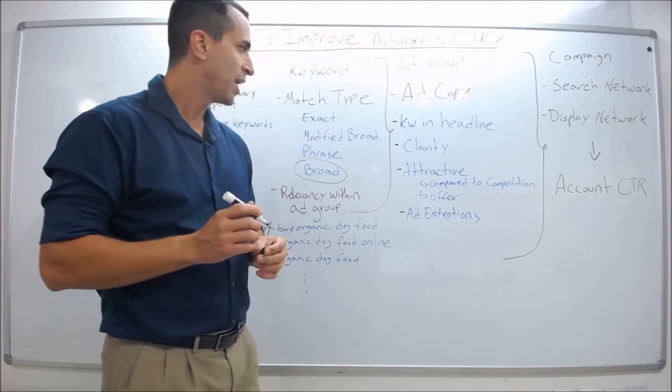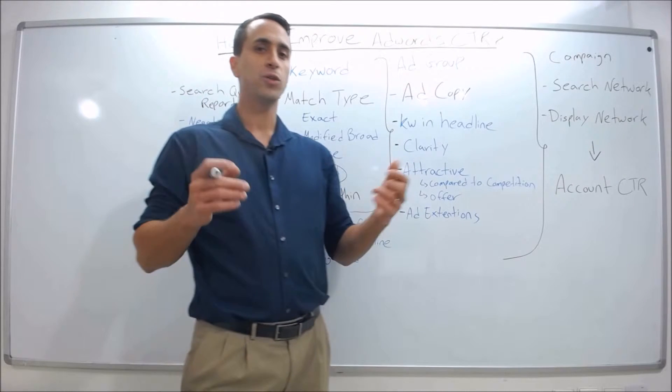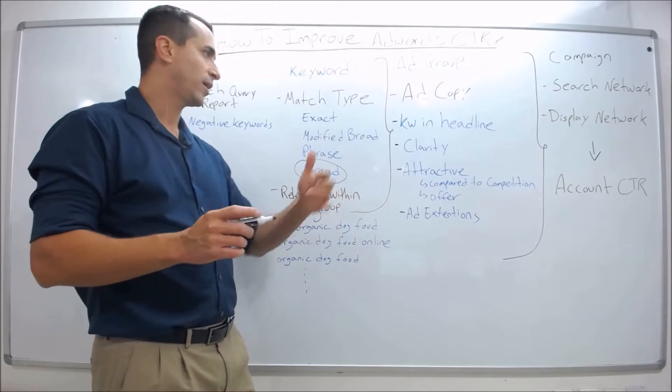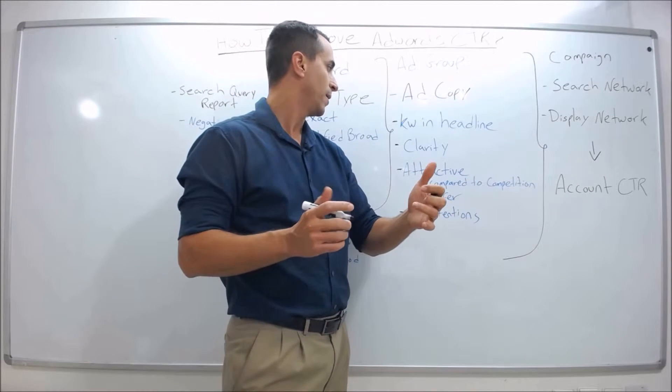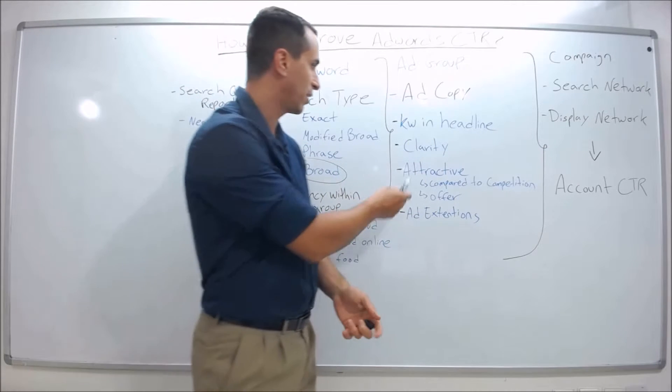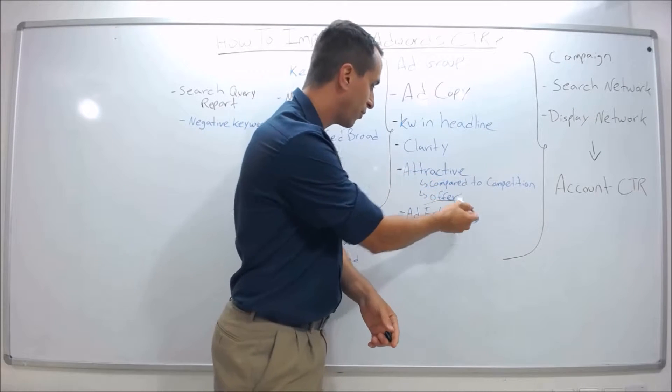Next thing you want to make sure your ad has is clarity. Make it very clear what you offer. Buy organic dog food, 100% organic dog food ingredients, see our best sellers, free shipping - something so it's clear what you do. You sell dog food, and then make it attractive, put an offer up.